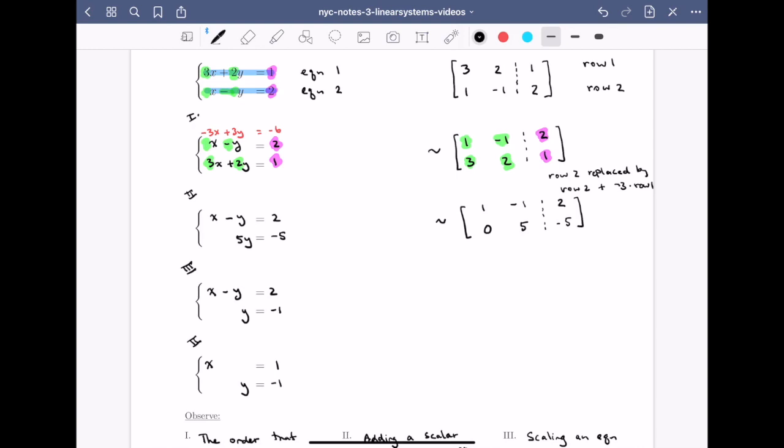The next thing that we did is we scaled row 2 by one fifth. So scale row 2 by one fifth. This gives us the new matrix 1 minus 1, 2, and 0, 1, minus 1. We can read row 2 now as 0x plus y equals minus 1, giving us exactly the y value equal to minus 1 as we found.